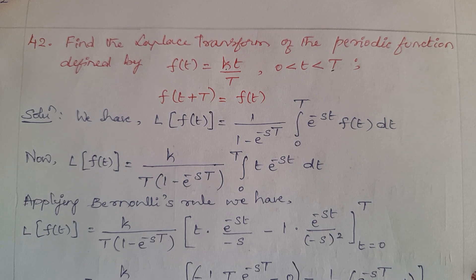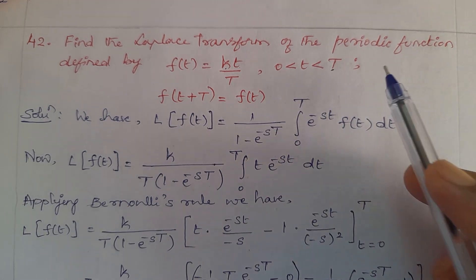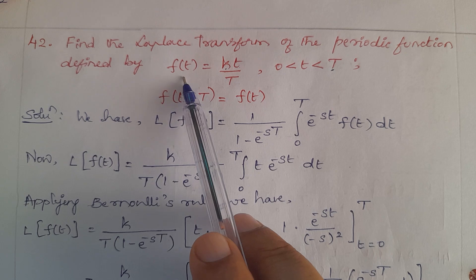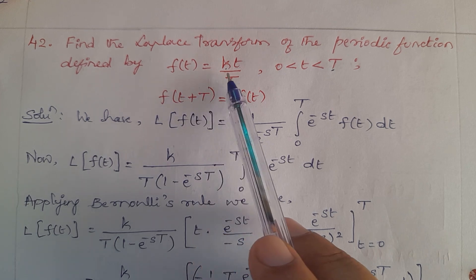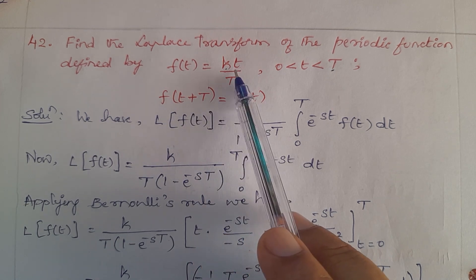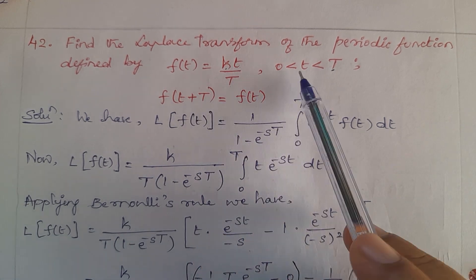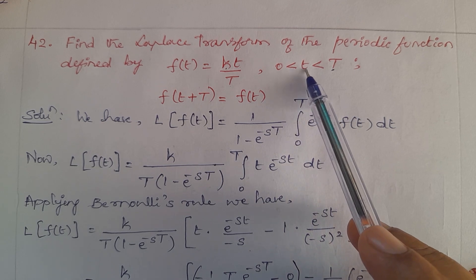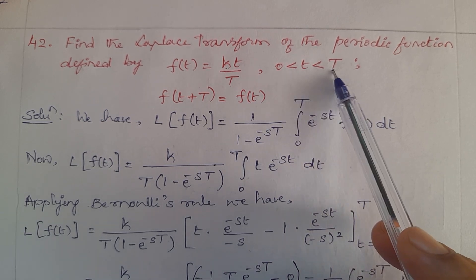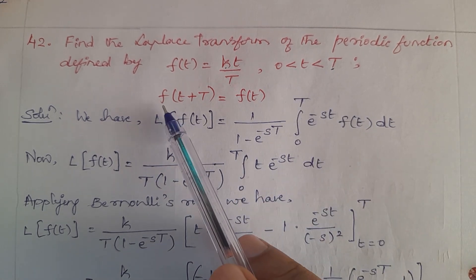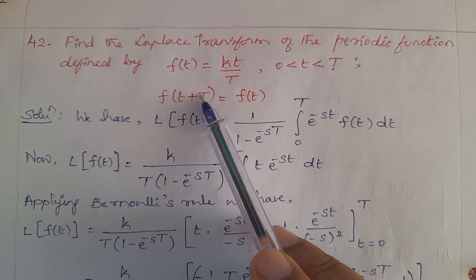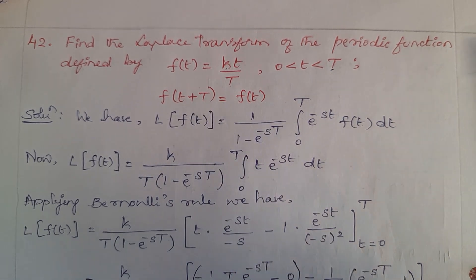Find the Laplace Transform of the periodic function defined by f(t) = k·t/T, where t varies from 0 to T, and f(t + T) = f(t).